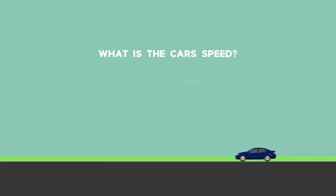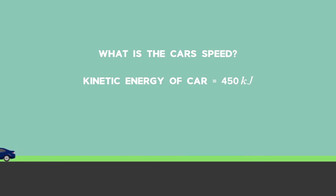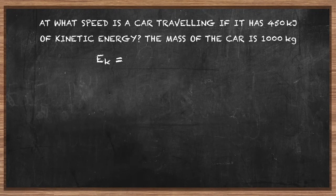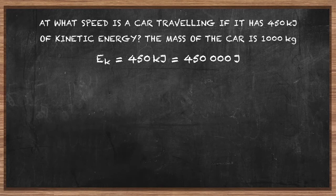Let's try another problem on kinetic energy. At what speed is a car traveling if it has 450 kilojoules of kinetic energy and a mass of 1000 kilograms? The kinetic energy is 450 kilojoules — we need to convert to joules by multiplying by 1000, giving 450,000 joules. The mass of the car is 1000 kilograms.